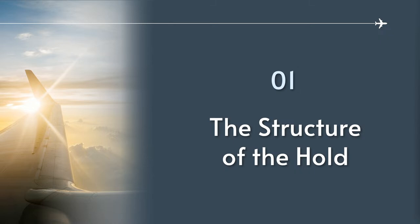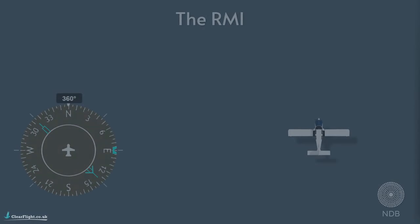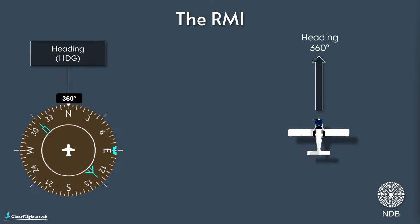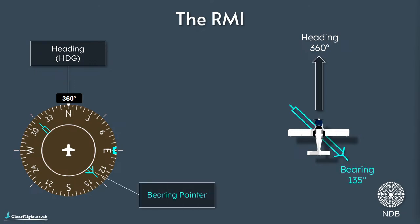Chapter one - the structure of the hold. Before we talk about the hold itself, I'll just cover the instrument we're going to be using quite a bit. We've got the heading at the top - in this case 360 degrees, which is the same direction that aeroplane on the right is flying. Then we've got a bearing pointer tuned to an NDB frequency, which will just point straight at whatever it is set to. And lastly, we've got a heading bug to indicate the heading that we intend to fly.